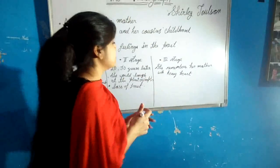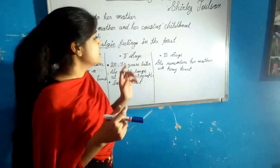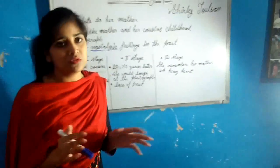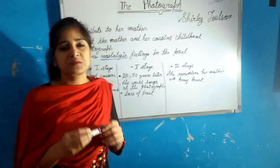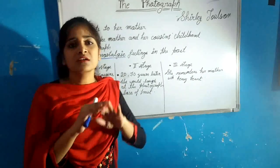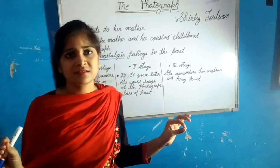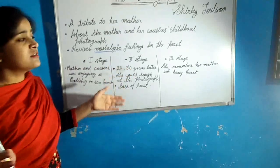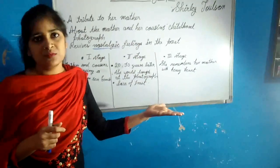In the third and final stage, she remembered her mother with a heavy heart. She got emotional in the final stanza and decided not to speak anymore — she required complete silence. So that's all about the overview of 'The Photograph,' and we will discuss this poem in detail through the text of the poem.